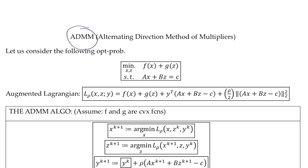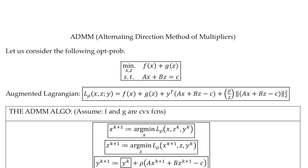ADMM stands for Alternating Direction Method of Multipliers. There is also another algorithm called Method of Multipliers, and Dual Ascent is another one. For current optimization problems where people use distributed optimization, this algorithm is considered close to the state of the art.